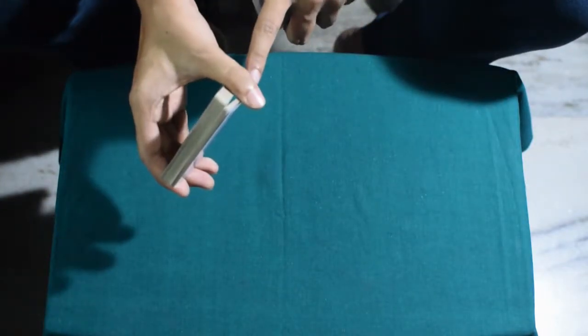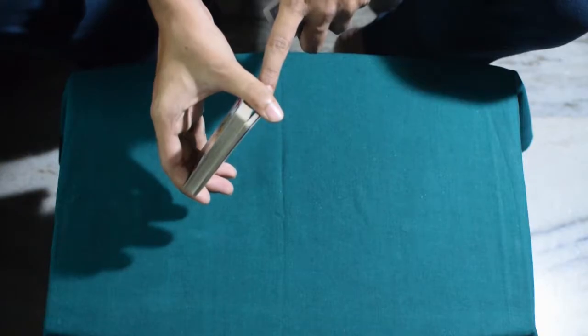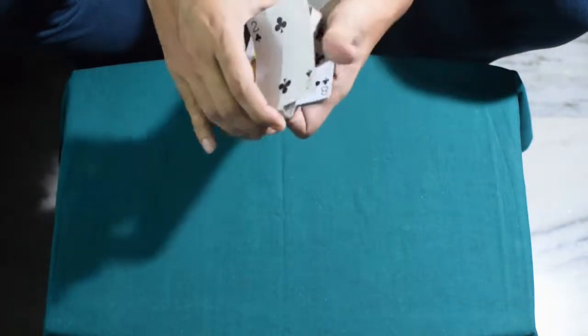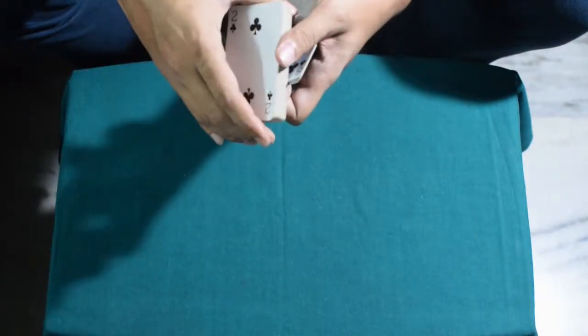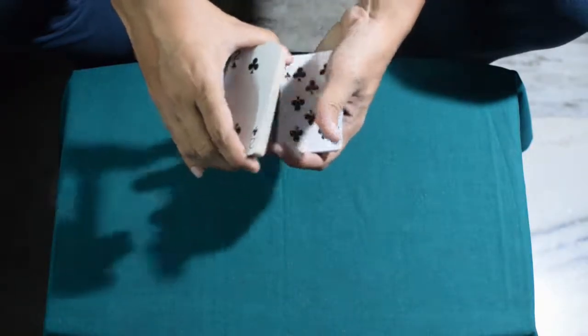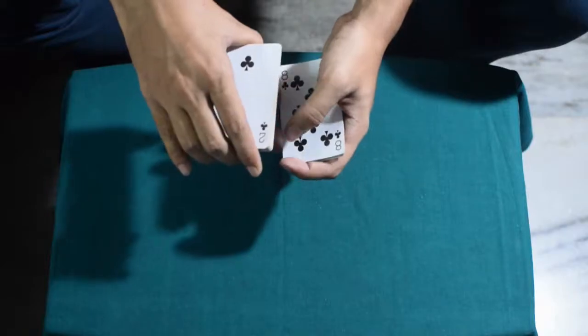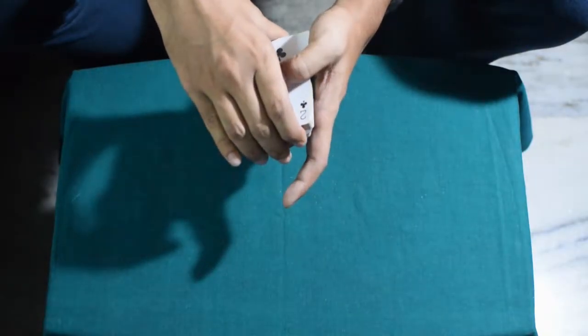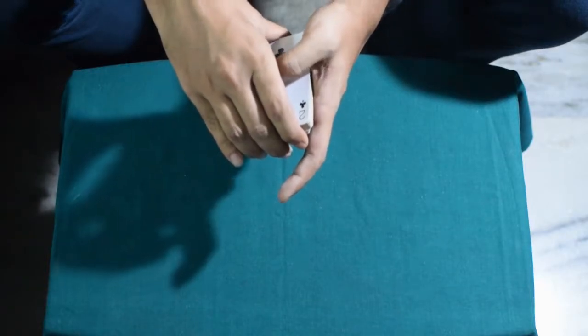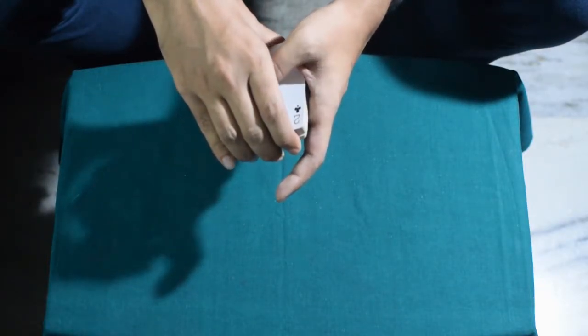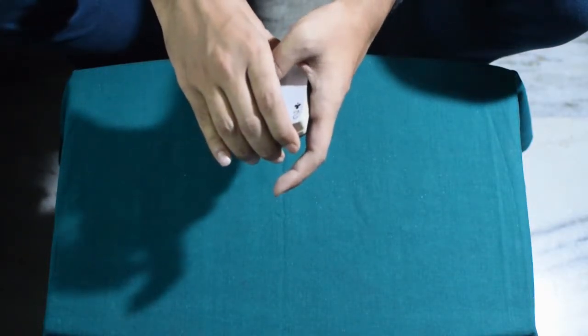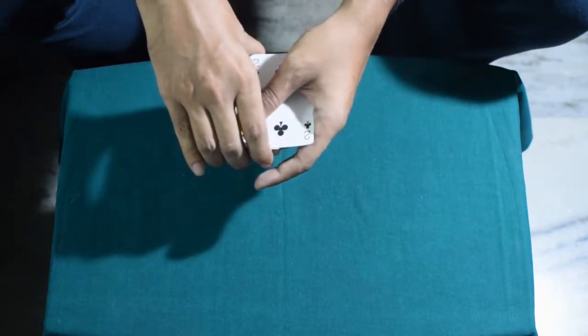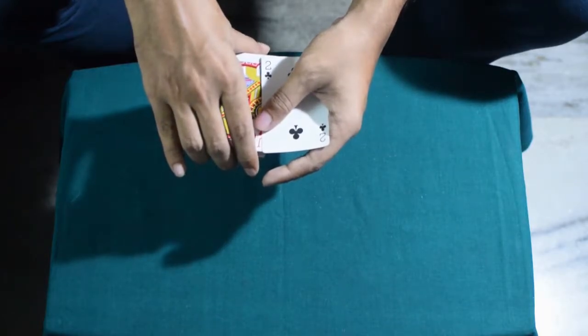So the packet of 11 cards is now in your this hand, and only the deuce is in this hand. Again, in slow motion, you have the 11 cards counted in your left hand, and as you go to place the 12th card on top, your middle finger and thumb grab the packet of 11 cards, and the weight of the deck drags the packet of 11 cards while you just simply fan off the deuce, the spectator's card.